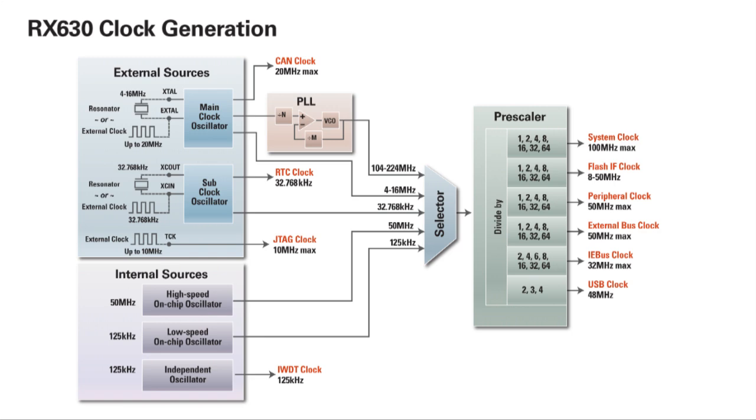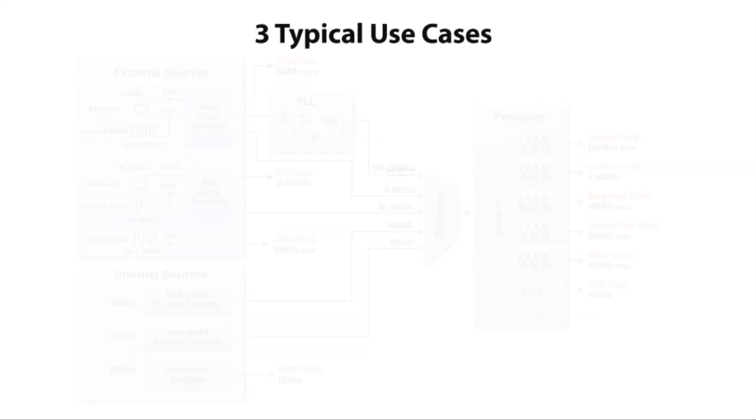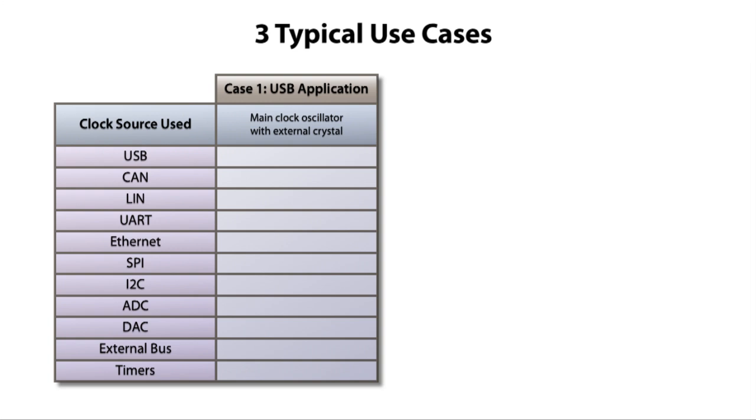Let's consider three typical use cases. First, let's consider an application which uses USB. The USB interface needs a high-precision clock source, and therefore a main clock oscillator using an external crystal is normally used. In this case, since a main clock oscillator is present, it can be used to generate all the clocks required for all the other modules.